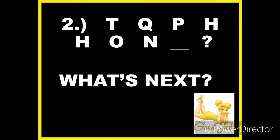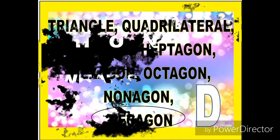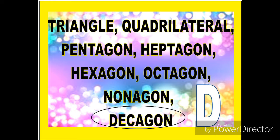These are polygons. T stands for triangle, Q for quadrilateral, P for pentagon, H for hexagon, H for heptagon, O for octagon, N for nonagon. The next letter is D, which stands for decagon.